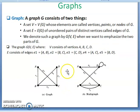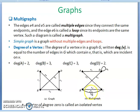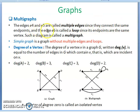The next one is multigraph. The edges E4 and E5 are called multiple edges — these are multiple edges between the same vertices B and C. Between B and C there are two edges: E4 and E5. And vertex D has one edge called a loop. E6 is the edge between the same vertex D. The edges E4 and E5 are called multiple edges since they connect the same endpoints, and edge E6 is called a loop since its endpoints are the same single vertex. Such a diagram is called a multigraph.